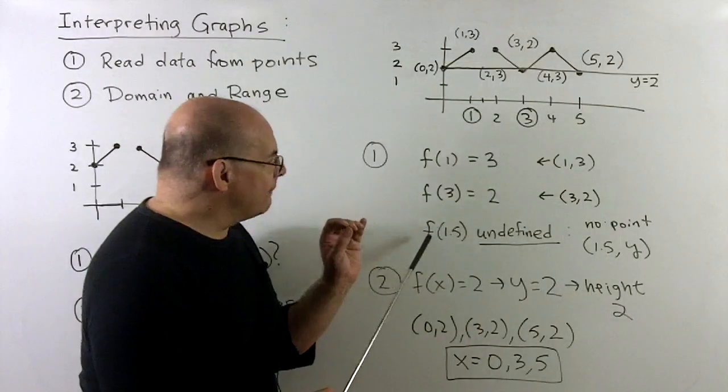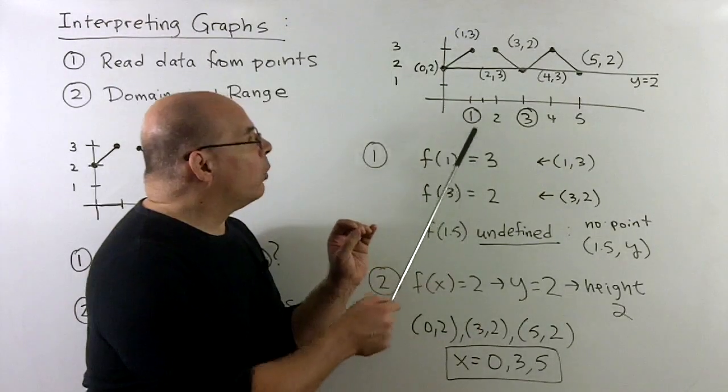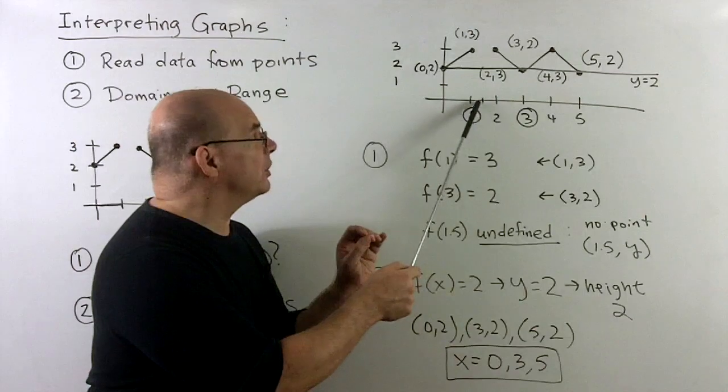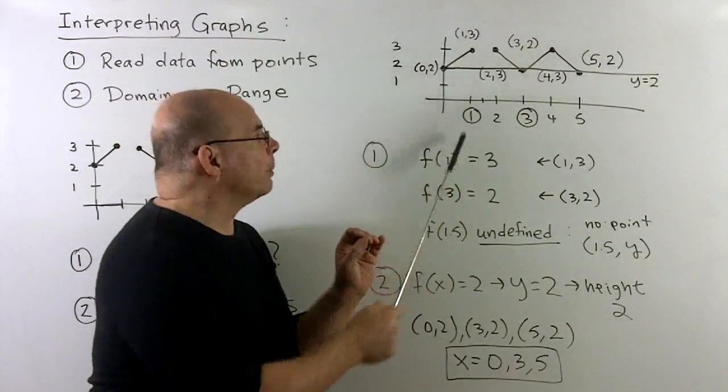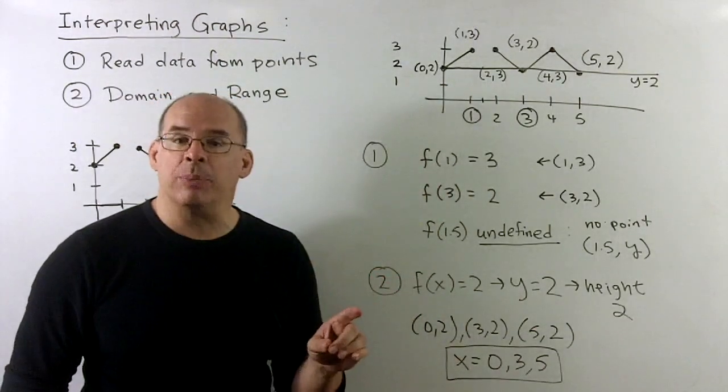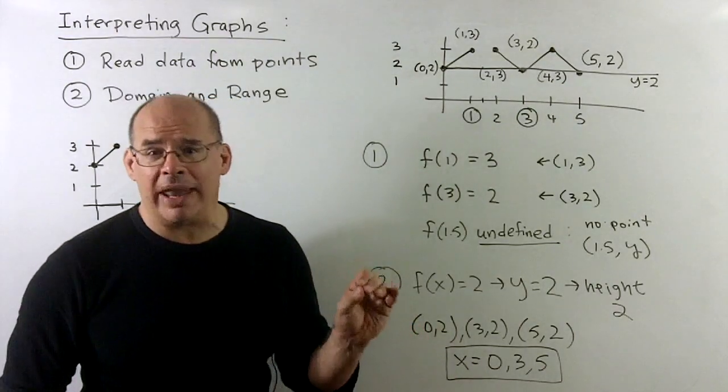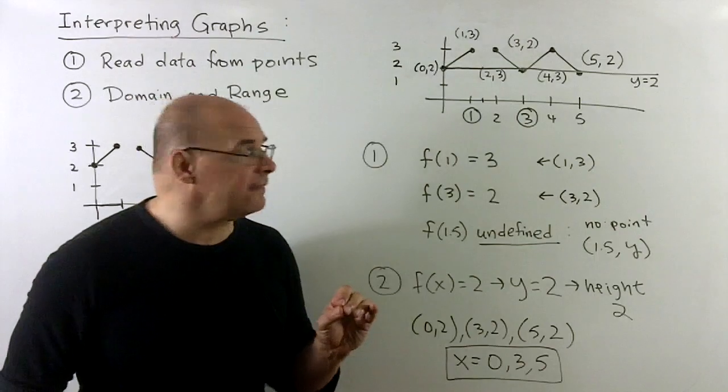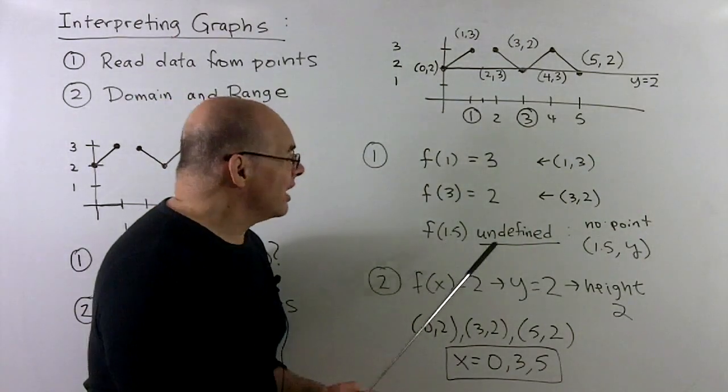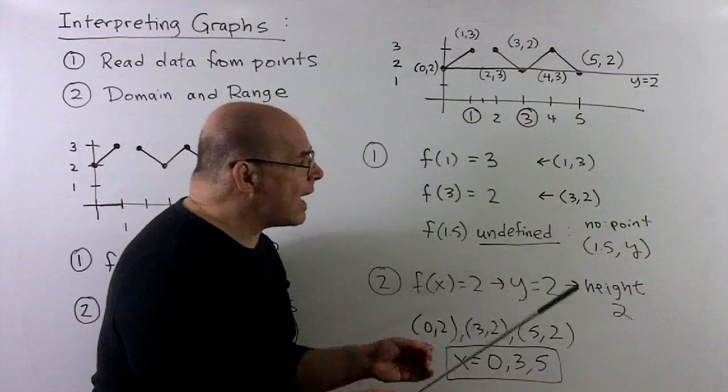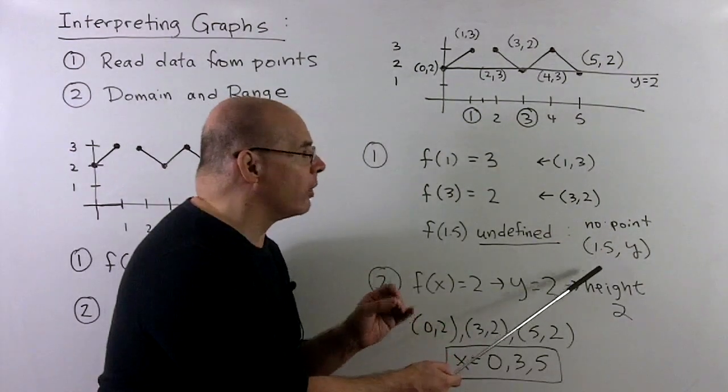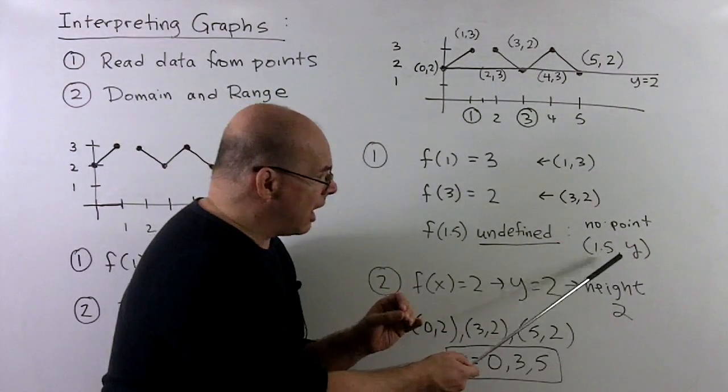Now, what about f of one and a half? We go to one and a half on the x-axis. That's between one and two. And if I look above or below, we're never going to have a point from the graph. So that means we haven't provided any data on what happens at x equal to one and a half. That means the best I can say is that's undefined. There's no point of the form one and a half comma y on the graph.